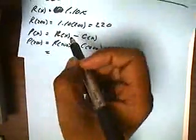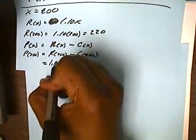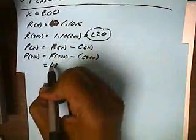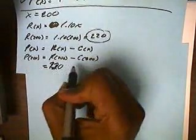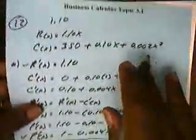So, revenue at 200, the revenue function was $1.10. In fact, we already know that answer. It's $220. So, let's put $220 there. Now, the cost function with $200 in it, let's go back up. Here's that cost function right here.